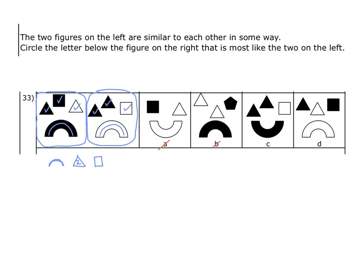Option C has two triangles, which we need, and the one square, which we also need. Unfortunately for option C though, the semicircle is in the wrong orientation — it's facing the wrong way. So C is incorrect.